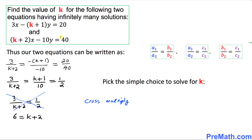Now I'm going to isolate k. Moving the 2 to the other side gives us 6 minus 2 equals k, which gives us k equals 4.